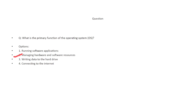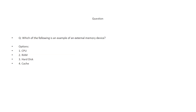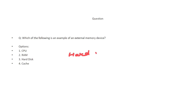Which of the following is an example of an external memory device? The options are: CPU, RAM, hard disk, and cache. The correct answer is hard disk, because hard disk is an external memory device — the rest are all internal memory types.